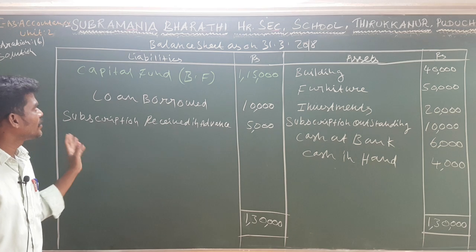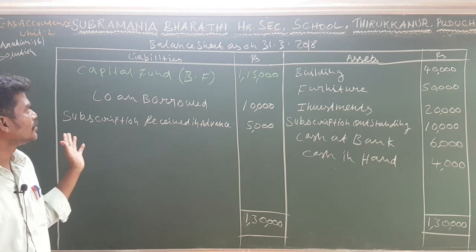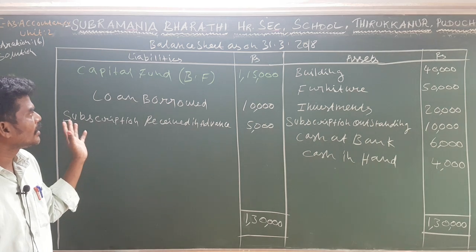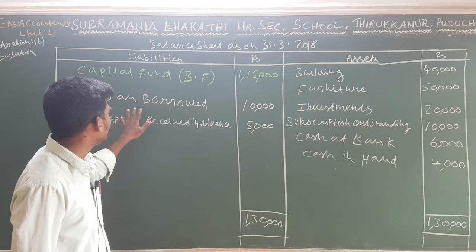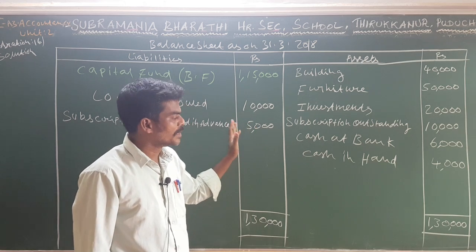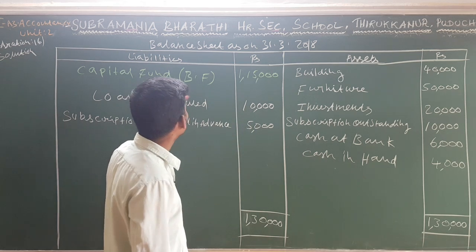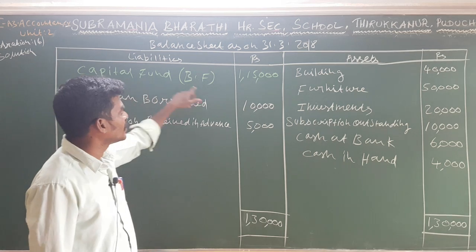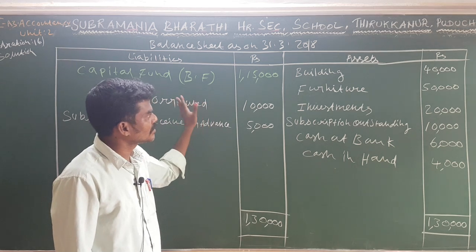Now let's talk about the capital fund. We have the balance sheet with total assets of 1,30,000. On the liabilities side, we have bank loan borrowed and subscription received in advance, totaling 15,000. The difference between assets and liabilities is equal to the capital fund: 1,30,000 minus 15,000 equals 1,15,000.